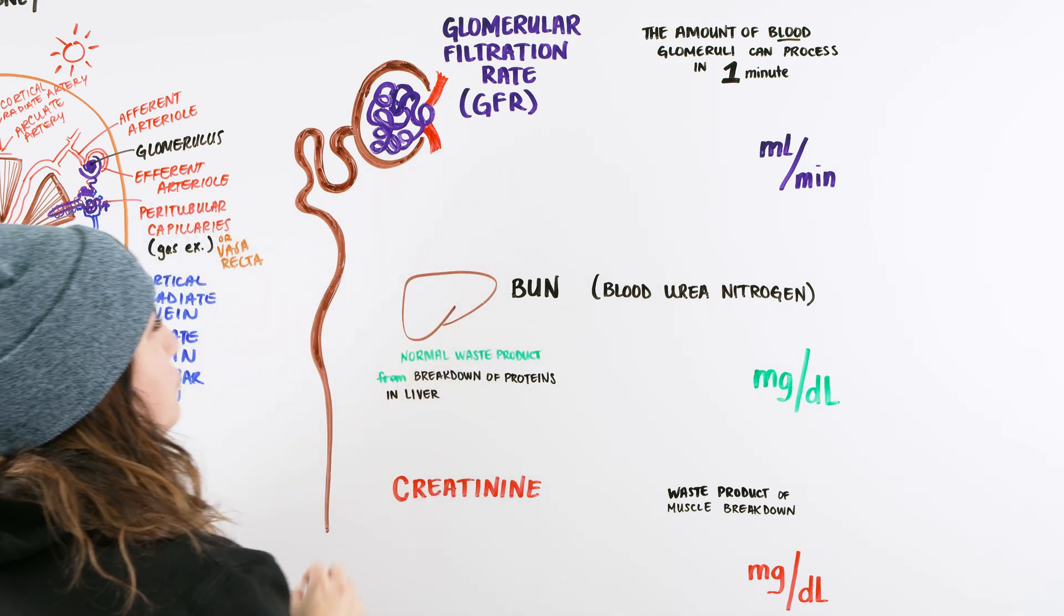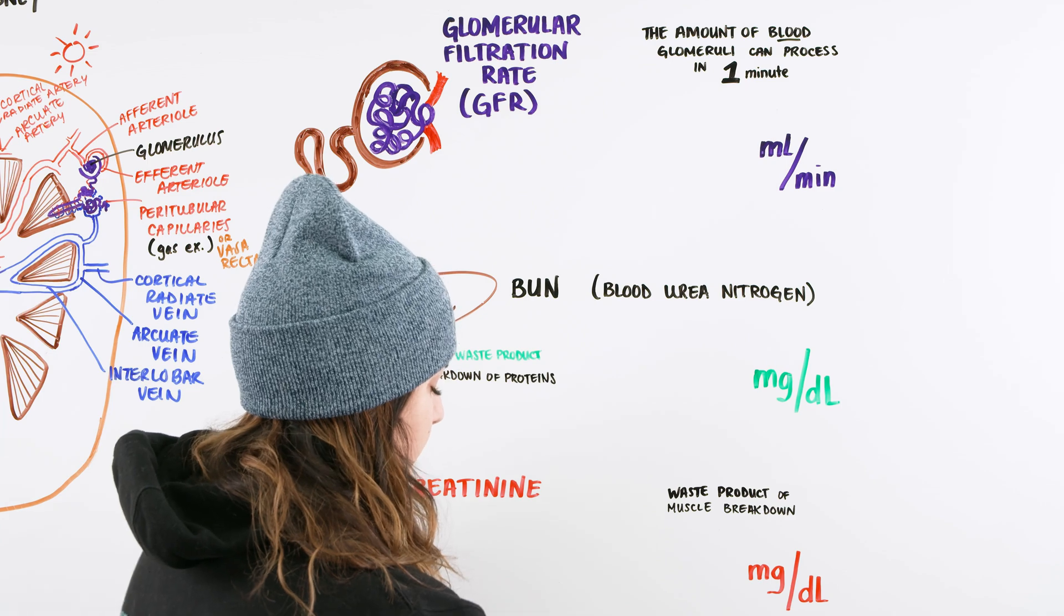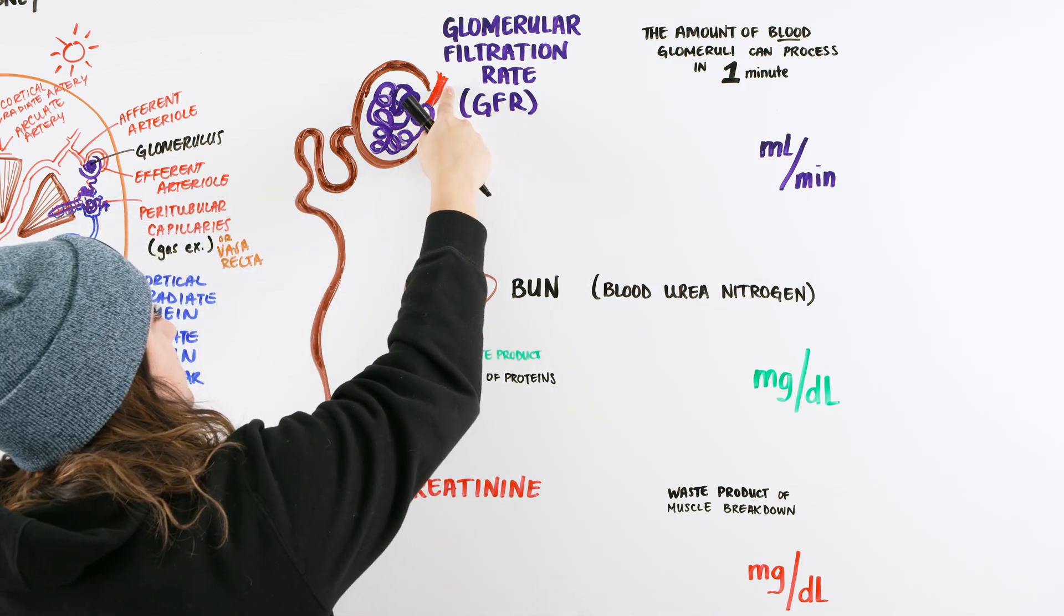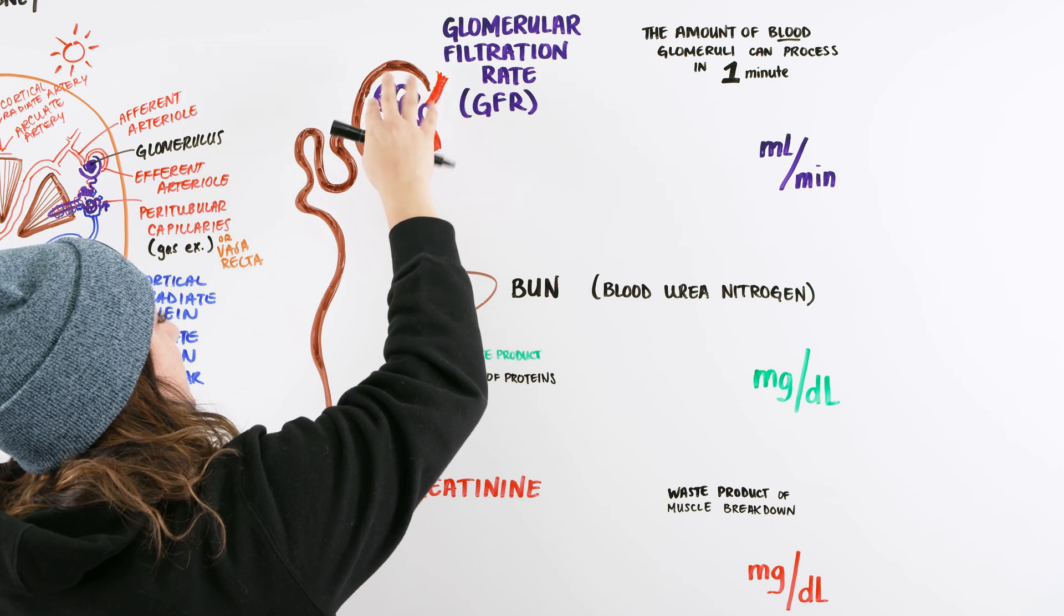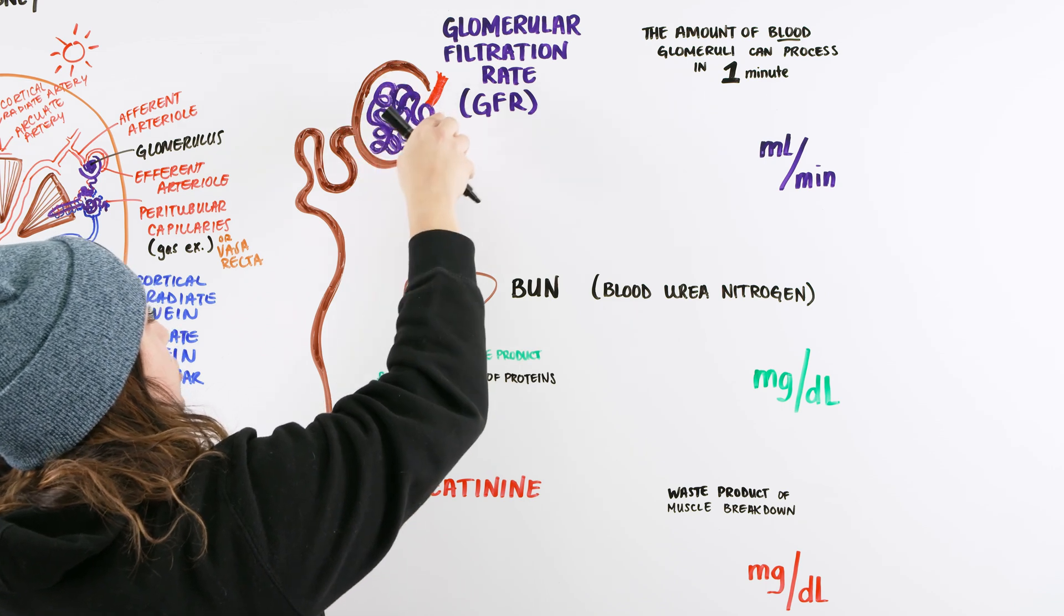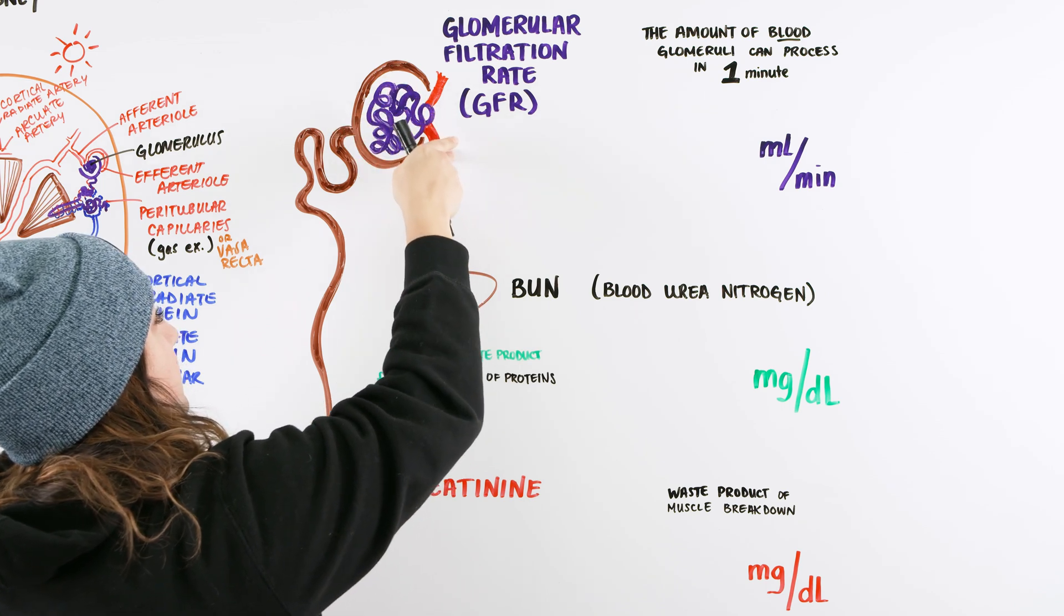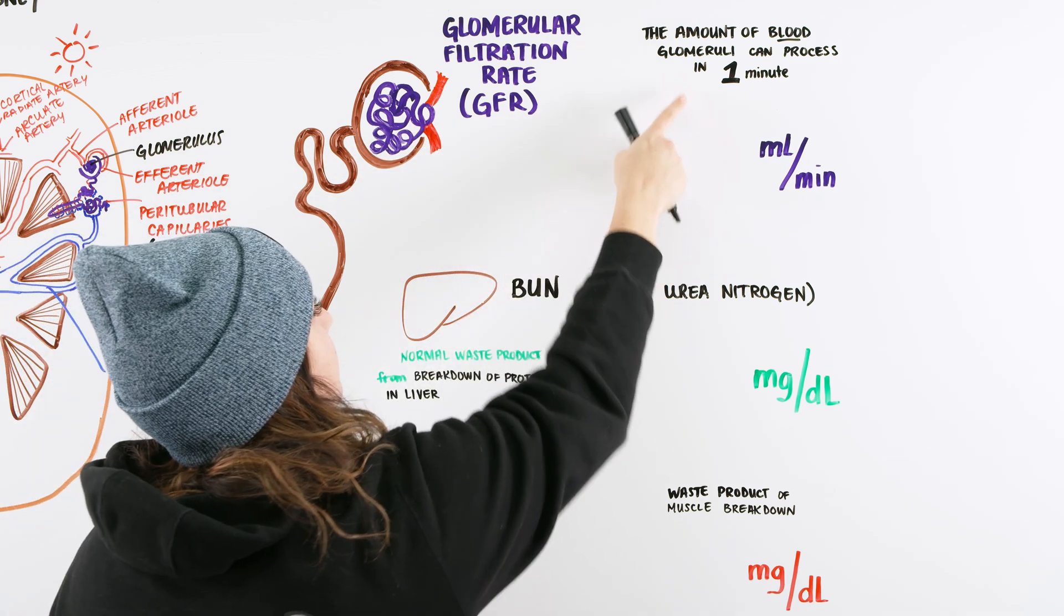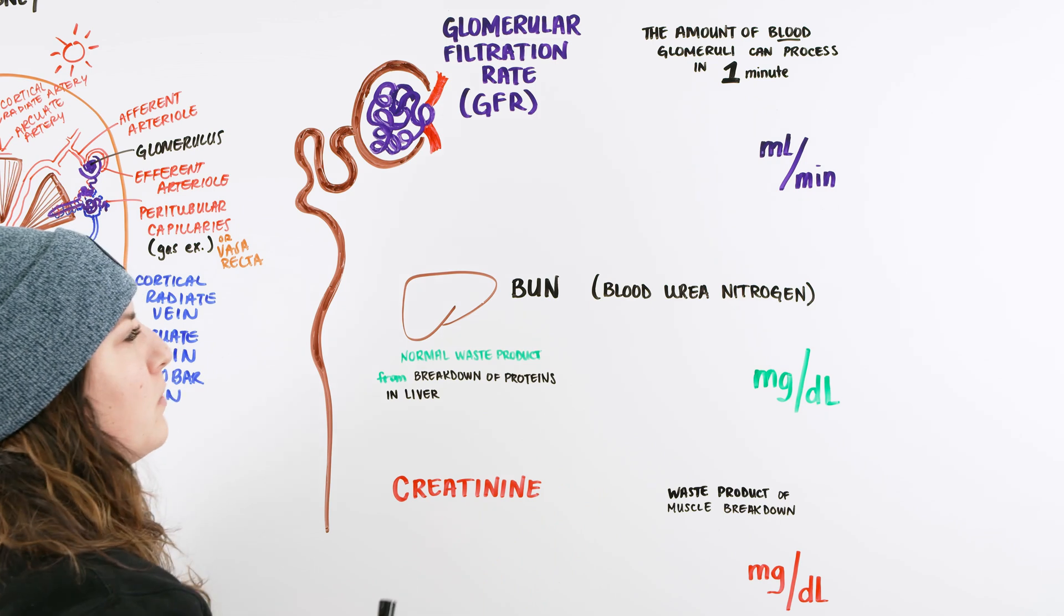We're going to talk about first the glomerular filtration rate, also known as GFR. What does that mean? Remember, we have an afferent arterial that goes into this glomerulus, which is a capillary area. There's an exchange, and then we have an efferent arterial. So this blood flow that's going through is the amount of blood that the glomeruli can process in about one minute.